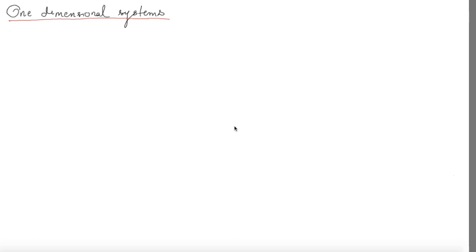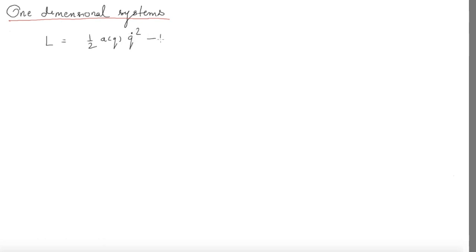If I want to write down the Lagrangian of a one-dimensional system, which I am going to label by a generalized coordinate q, then the Lagrangian would be, as you are already familiar, the following: L equals half A of q times q-dot squared minus the potential energy U, which is a function of q.